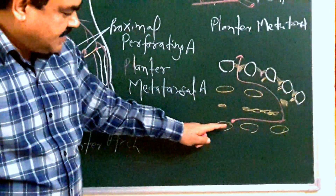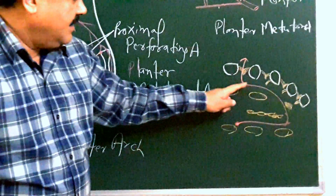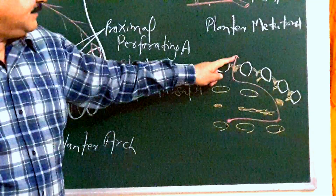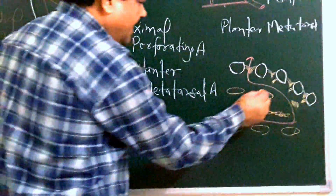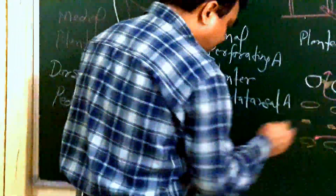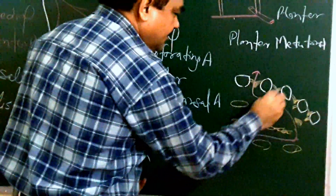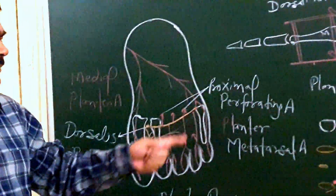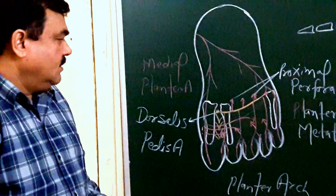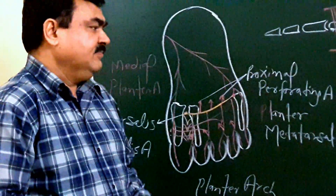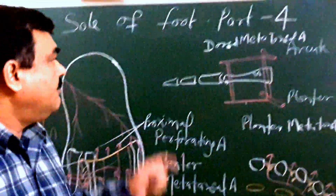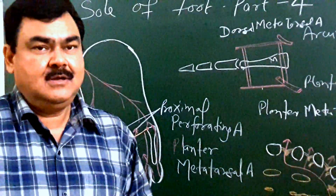Initially the lateral plantar artery passes between the first and second layer, then it turns and communicates with the dorsal pedis artery. These are the proximal perforating arteries. This is all about the sole of the foot, part four — the arterial supply of the foot.